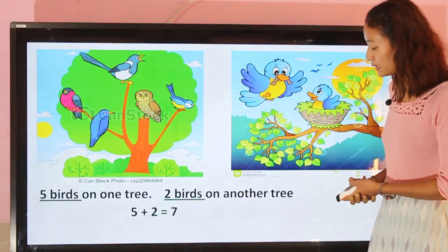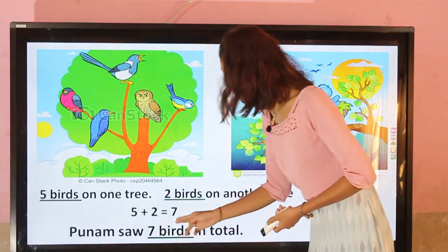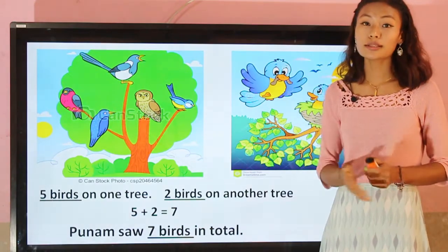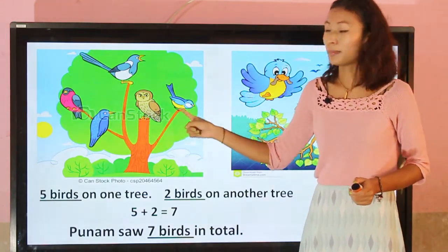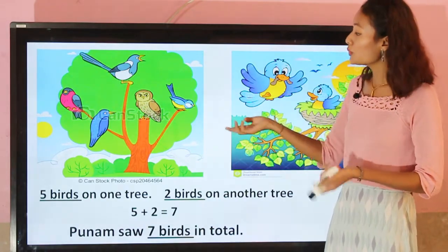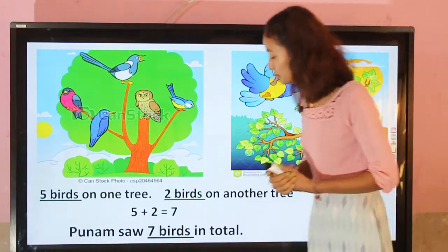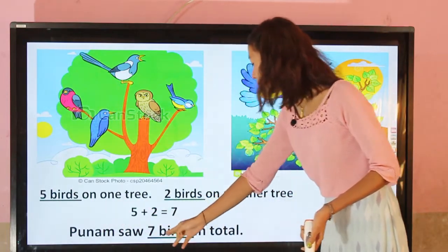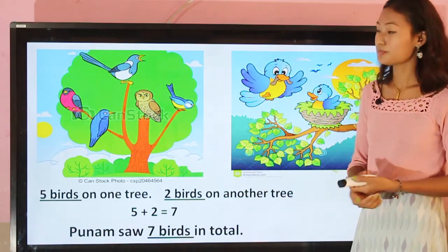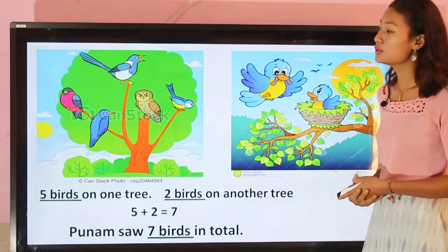You have to write here: Poonam saw seven birds in total. She saw five birds on one tree and two birds on another tree, and when you add them together, she saw seven birds in total.